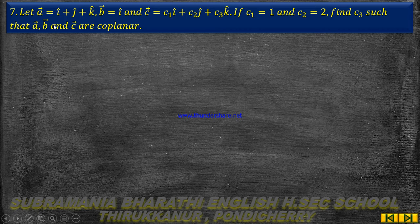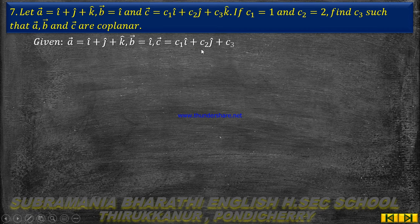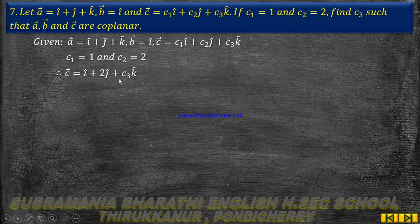So, in which case are A vector, B vector, and C vectors coplanar? Given A vector, B vector, and C vectors are coplanar, find C3. First, apply C1 equal to 1 and C2 equal to 2. Therefore, C vector equal to I cap plus 2 J cap plus C3 K cap.